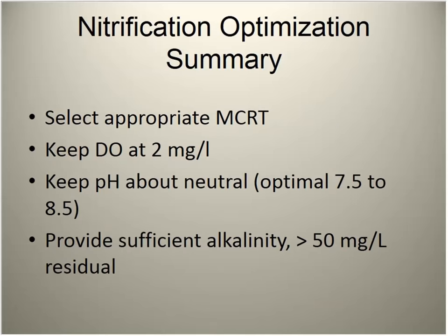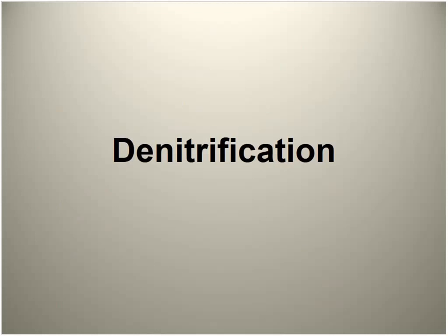Find the right MCRT depending on the temperatures you're dealing with, adjust your wasting rates accordingly, keep dissolved oxygen at a minimum of 2 mg/L, watch your pH, make sure alkalinity is where it should be. A question came in about improving denitrification efficiency — that will be covered in just a few minutes.